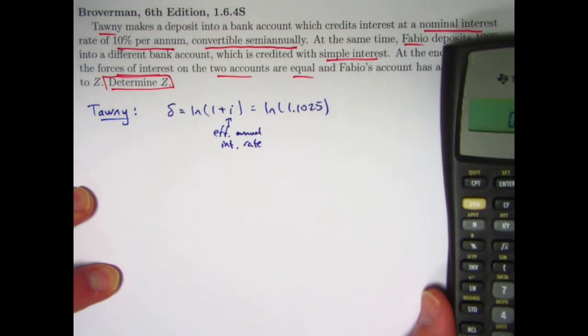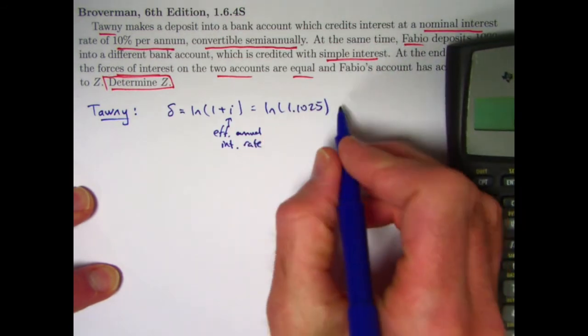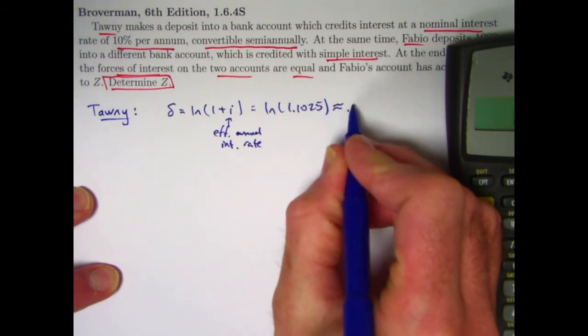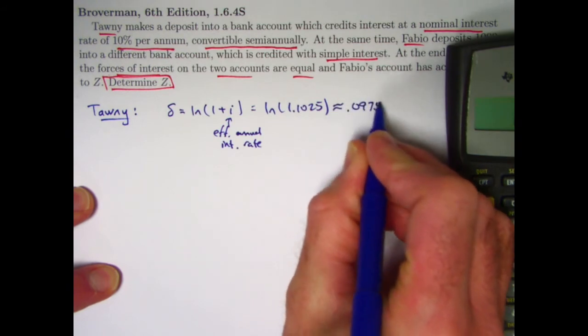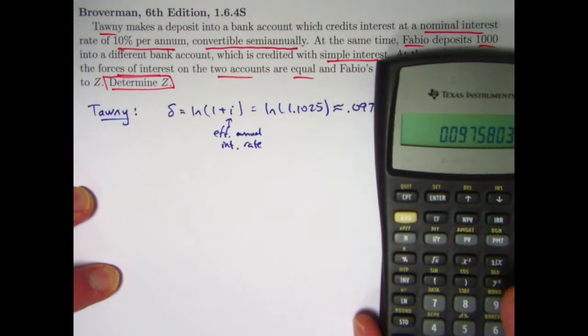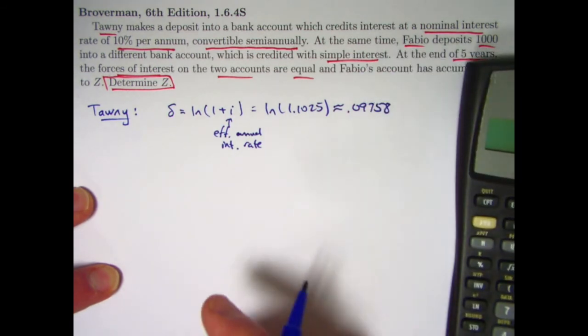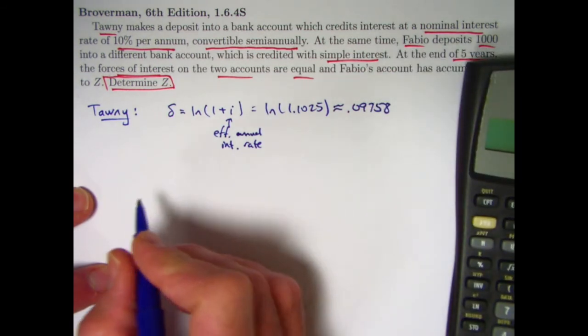It's about 0.09758. I think I will go ahead and just keep only that many decimal places and use that number. 0.09758. That's going to be pretty close. Alright, so that's what Tawny's constant force of interest is.